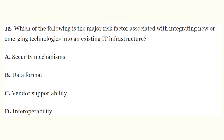Question 12: Which of the following is the major risk factor associated with integrating new or emerging technologies into an existing IT infrastructure? The correct answer is D — interoperability. Interoperability is the major risk factor and covers a wide range of factors, including backward compatibility, data format, security mechanisms, and other aspects of system integration.